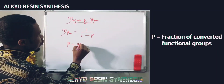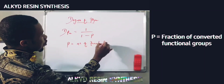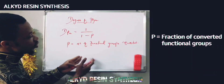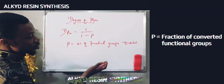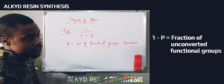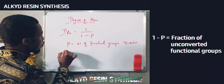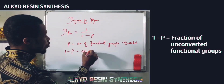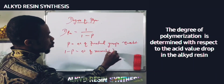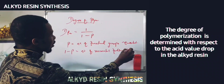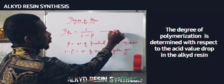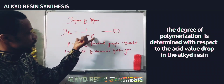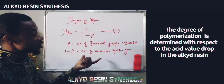P is the fraction of functional groups that have been converted — it tells you the extent to which functional groups have been converted resulting in the polymer, or in the alkyd resin. And (1 minus P) represents the fraction of functional groups that have NOT been converted into the polymer chain — the unconverted functional groups. This is the formula for degree of polymerization and this is how it is expressed theoretically.